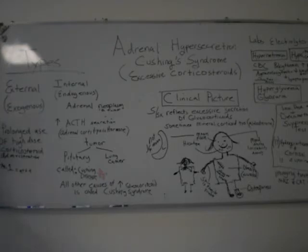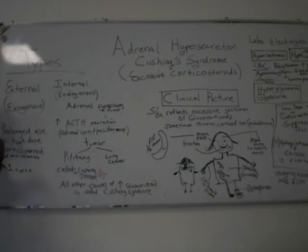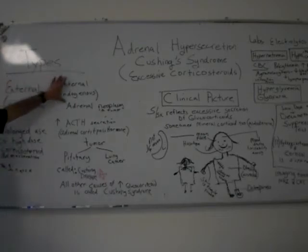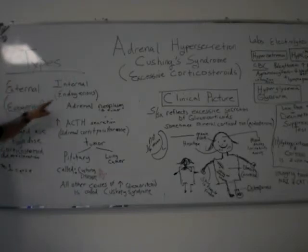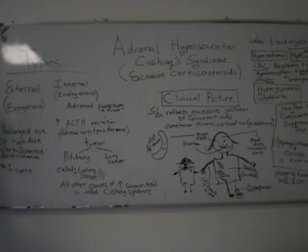Excessive secretion of the hormones of the adrenal gland can have two causes: they can be external, or they can be internal. Internal, external. Endogenous means internal. Exogenous means external. Let's start with the exogenous first.